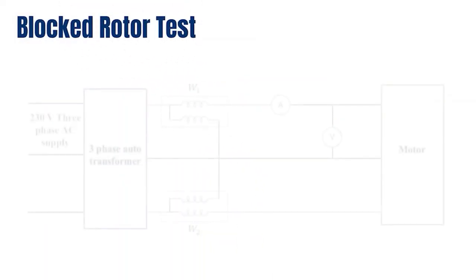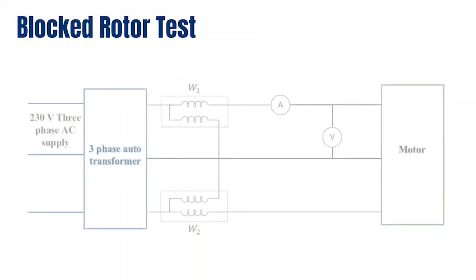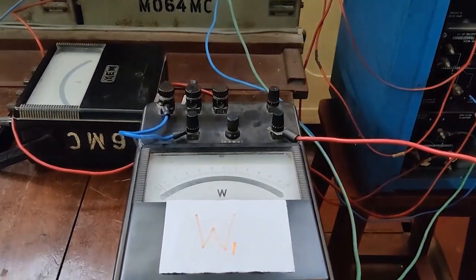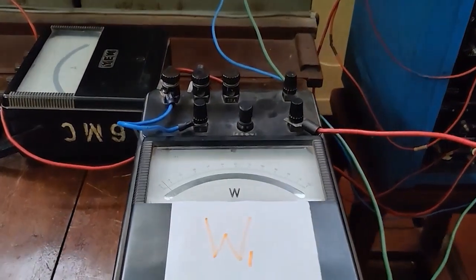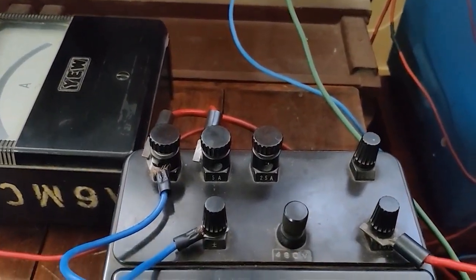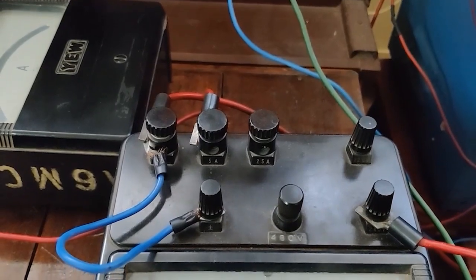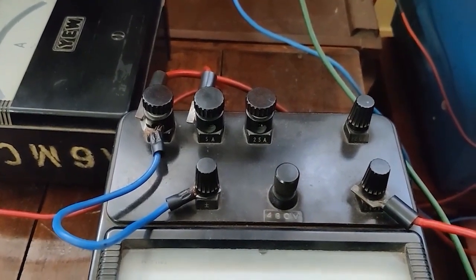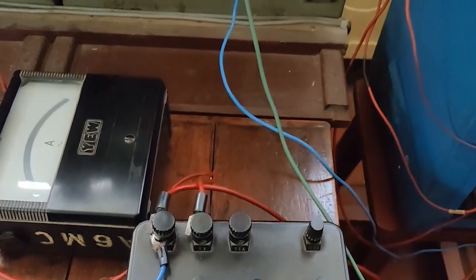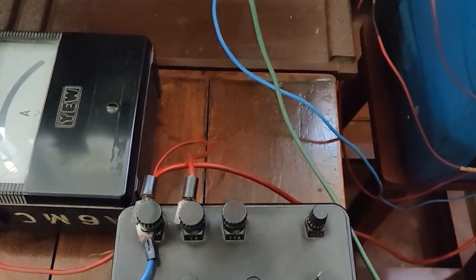Now the third test: the blocked rotor test. Observe this circuit carefully. Keep the entire circuit arrangement the same as in the no-load test, but change only the connections of wattmeter W1 as shown in the circuit diagram.